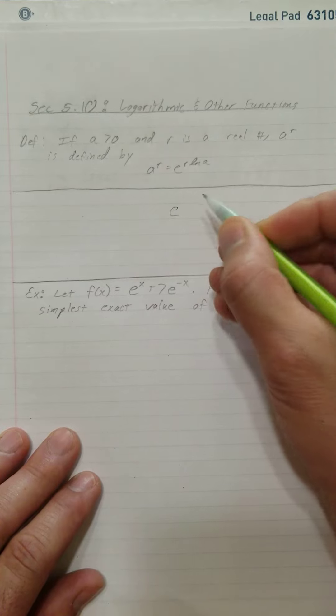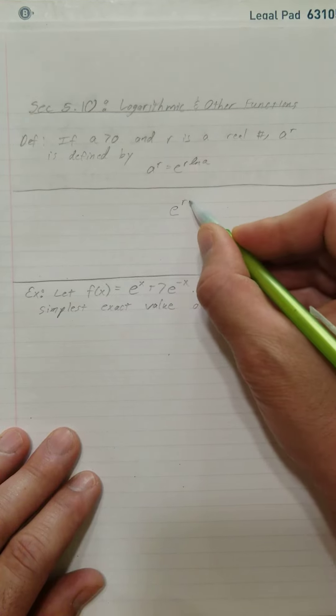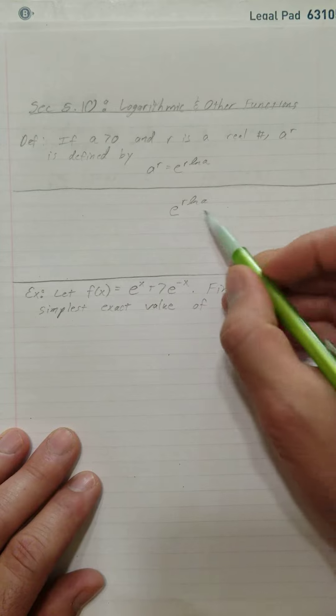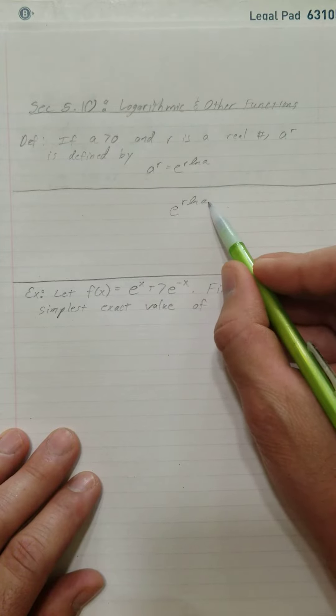Well, here's how I like to think of this. I like to think of it as, suppose you start out with this: e raised to the r times the natural log of a.